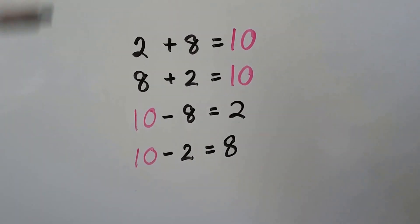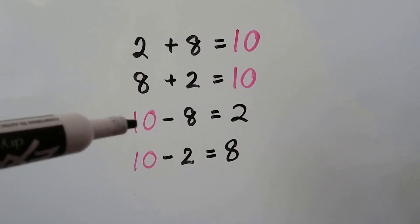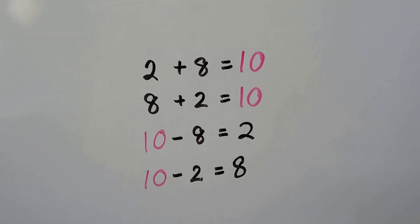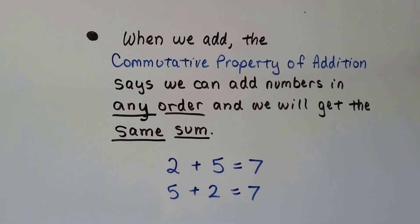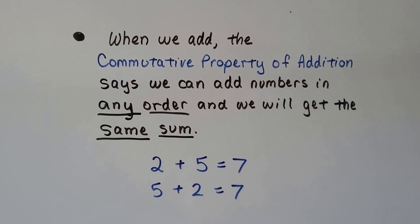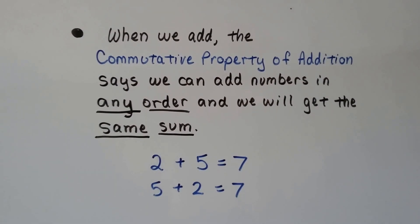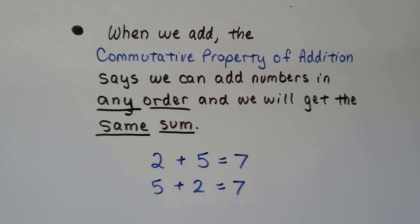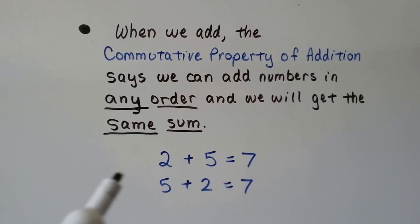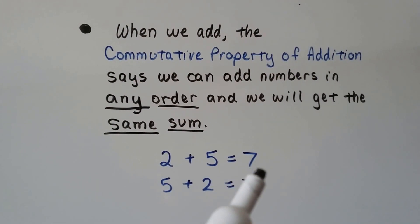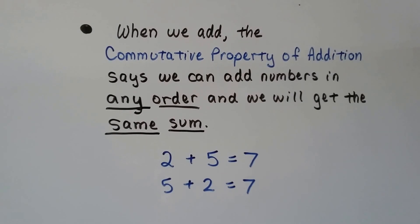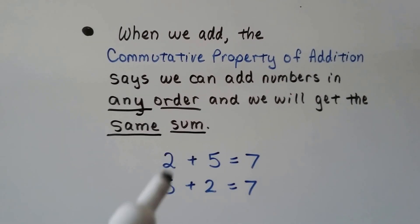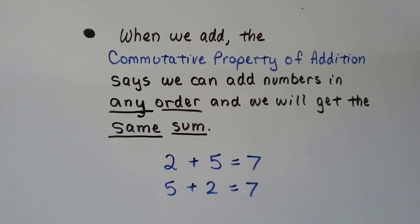And the sum in the addition sentence is the minuend in the subtraction sentence. Now when we add — we've talked about this before — the commutative property of addition says we can add numbers in any order and we're going to get the same sum. We can add 2 plus 5 and it'll equal 7, and 5 plus 2 equals 7. Doesn't matter what order we add them, we'll still get a 7.